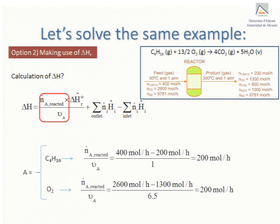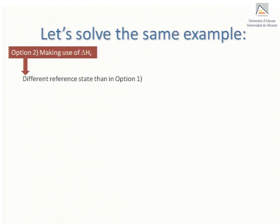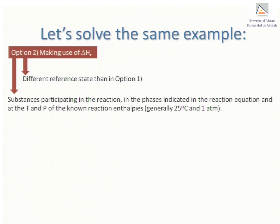The reference state in this case differs from the one we used in option one. It should be that of the substances participating in the reaction in the phases indicated in the reaction equation and at the pressure and temperature of the known reaction enthalpies, generally 25 degrees Celsius and 1 atmosphere. That is, the temperature, pressure, and phases of the reactants and products are constrained by the reaction enthalpy we choose.